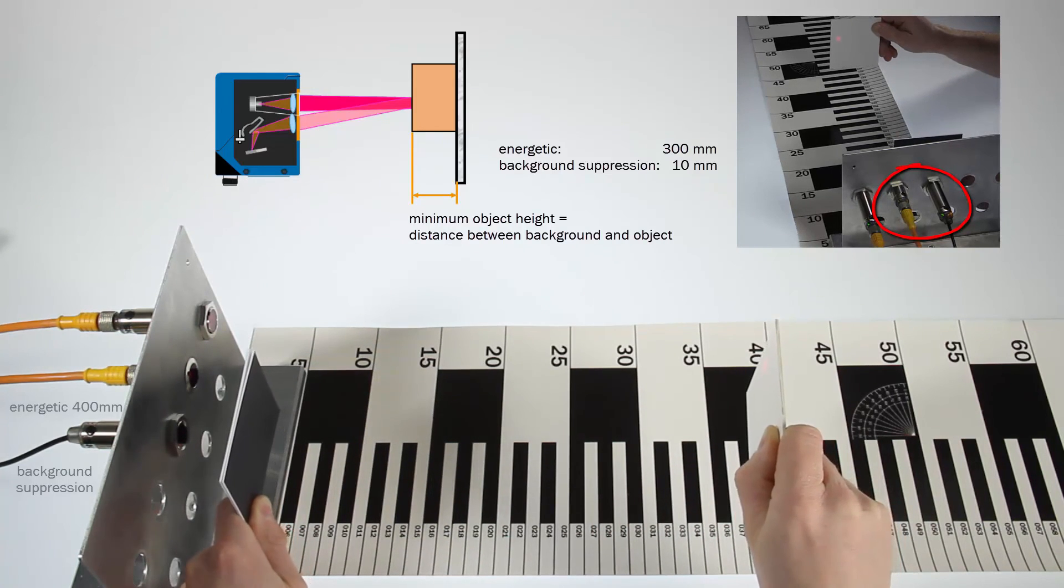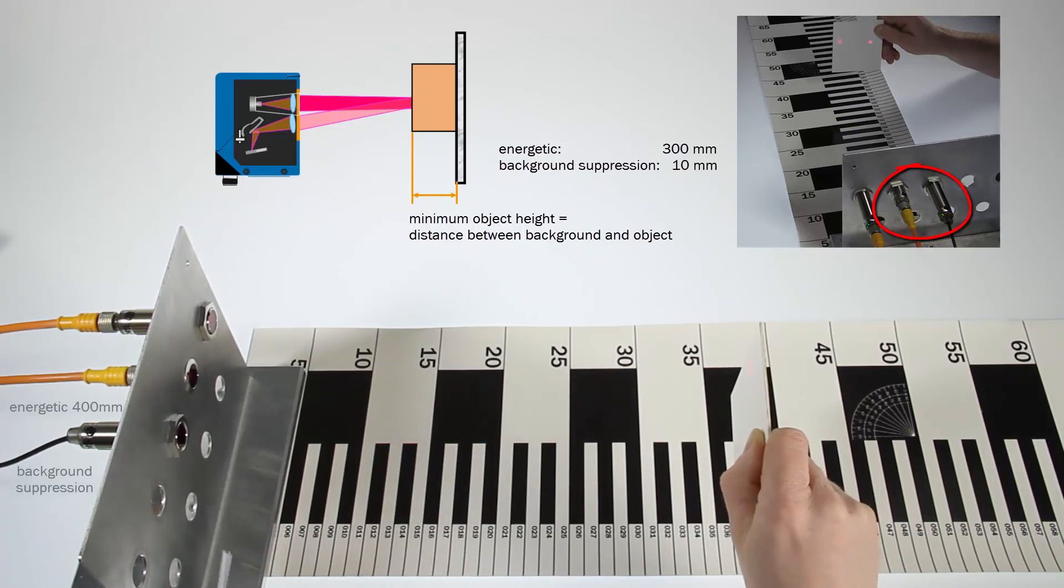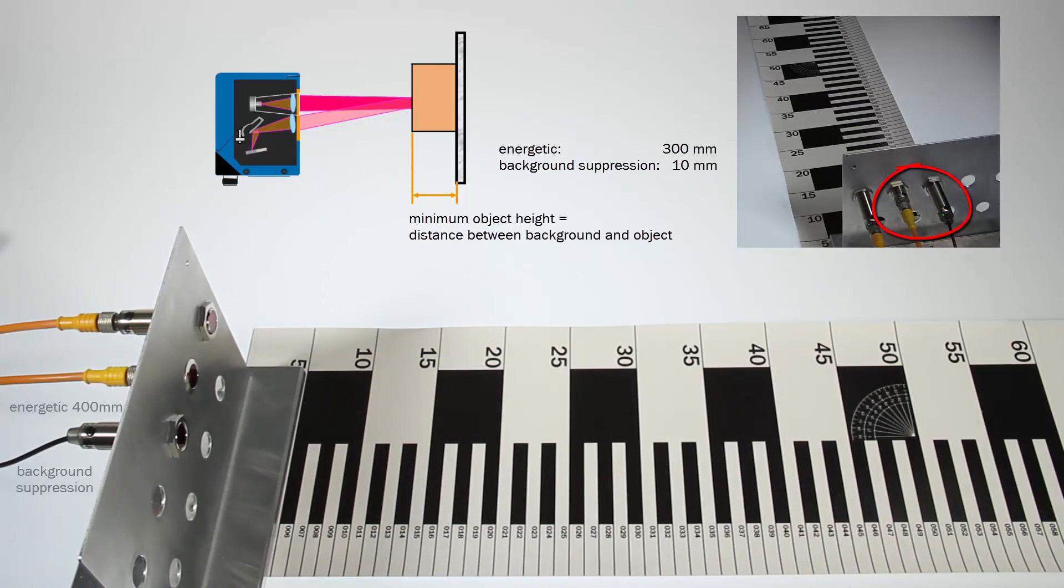Compare the 10 mm of the background suppression sensor and the 300 mm of the energetic sensor with the same setting.